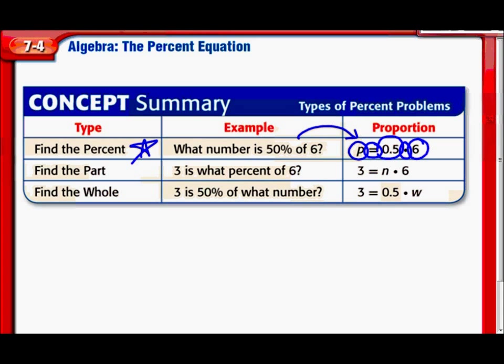If you're finding the part, it might look something like this one. 3 is what percent of 6? So you got that 3 at the beginning. There's a 3. Is, is the equal sign. What percent, there's your variable for the percent, of, again, means times 6. Bam. So, 3 is what percent of 6? That's what that equation would look like.